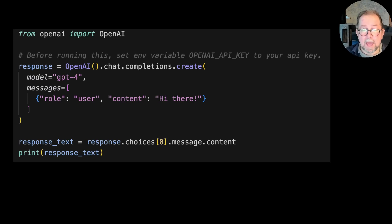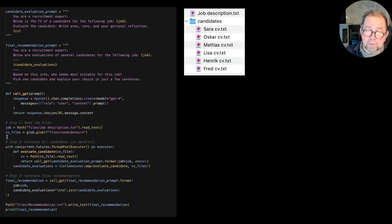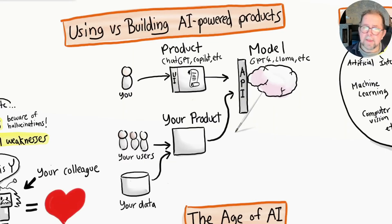So here's a simple example of using OpenAI API to talk to GPT - not a lot of code needed. And here's another example of the automatic candidate evaluation thing I talked about. It takes a job description and a bunch of CVs in a folder and evaluates each candidate automatically.